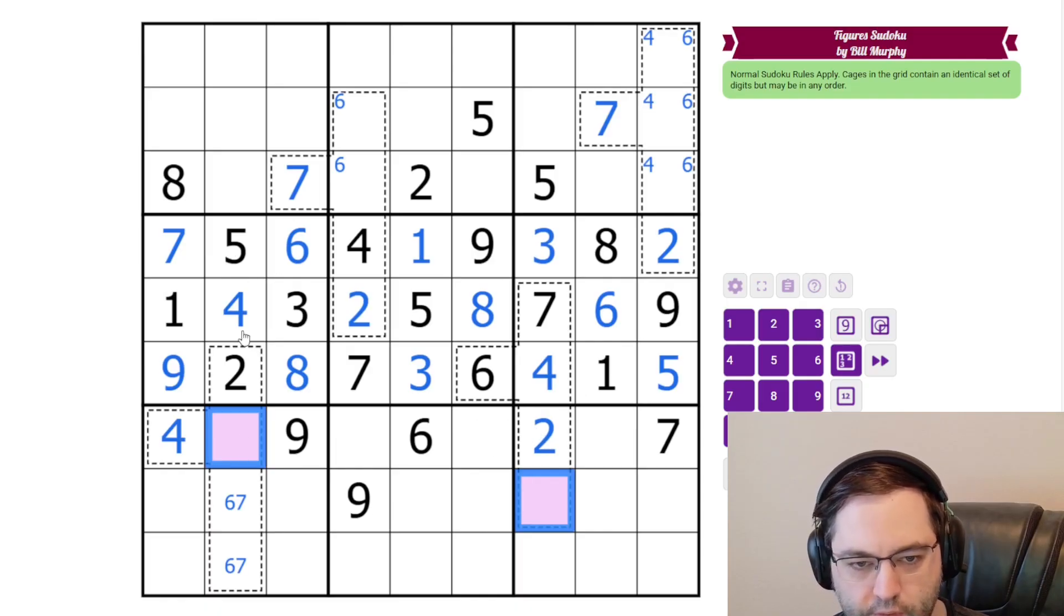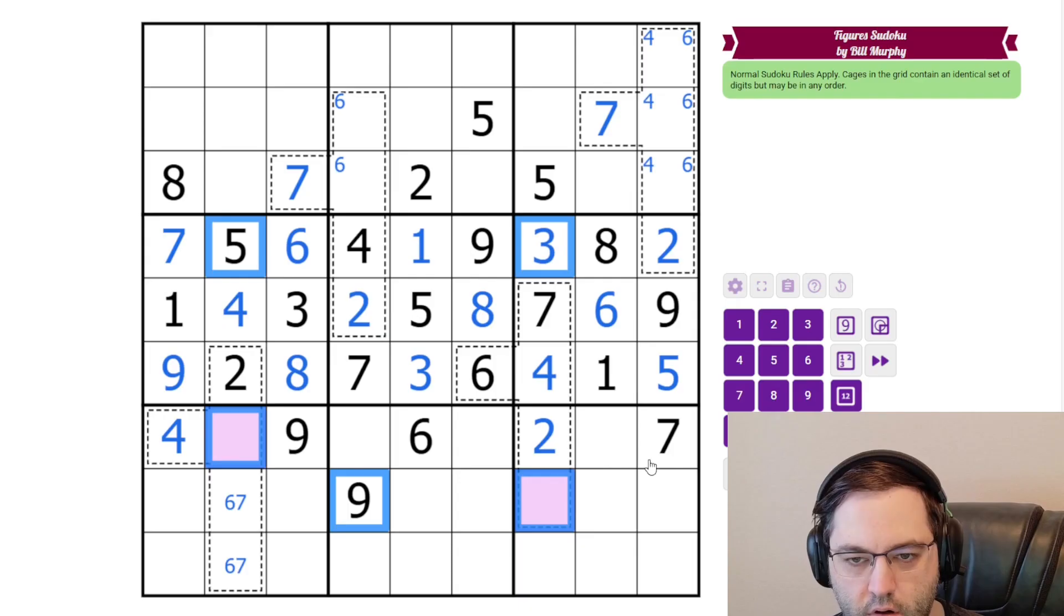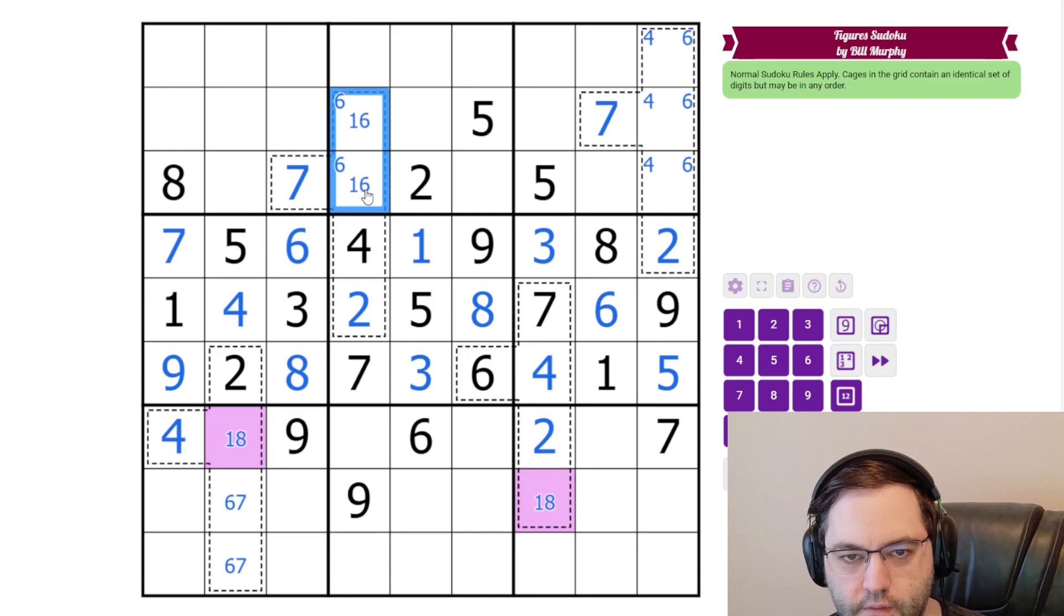So not two, four, six, seven. Not five. Not three. Not nine. That leaves one and eight, I believe. And I don't think we can resolve that yet. So let's put one-eight here. These are one, six, and eight. And this can't be eight.